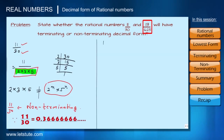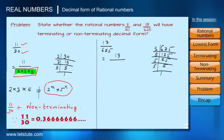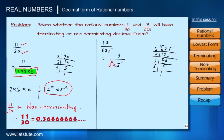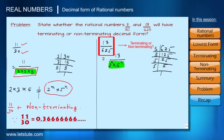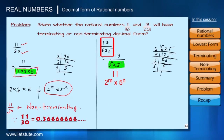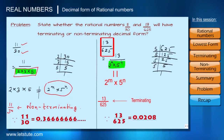For 13/625: 13 cannot be factorized further, and 625 = 5⁴. The denominator has only 5 with power 4, and we know we can write 2⁰ alongside every power of 5. So the denominator is 2⁰ × 5⁴, which is of the form 2^m × 5^n. Therefore, 13/625 is terminating. We now understand how to identify whether a number is terminating or non-terminating without division.